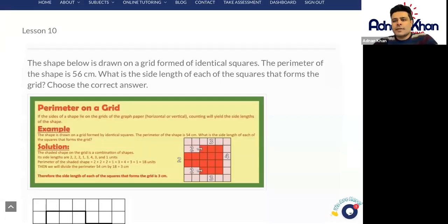Hello there and welcome to this particular 11 plus maths test. Let's look at the question in detail. So the shape below is drawn on a grid formed of identical squares. The perimeter of the shape is 56 centimeters. What is the side length of each of the squares that forms the grid itself?